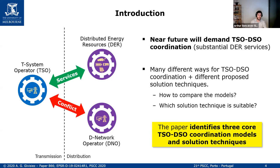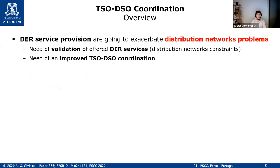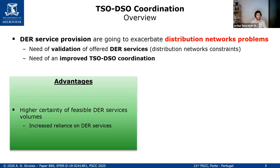We surveyed the literature and saw that there are many different ways of doing this coordination and also different proposed solution techniques. We wanted to compare the models, and the best way of doing this is to find a common base. We came up with three core models to present today. The DR services provision are going to exacerbate distribution network problems, so we need to validate these DR services considering distribution network constraints. And also, we need to improve the TSO-DSO coordination. There are some advantages to this coordination.